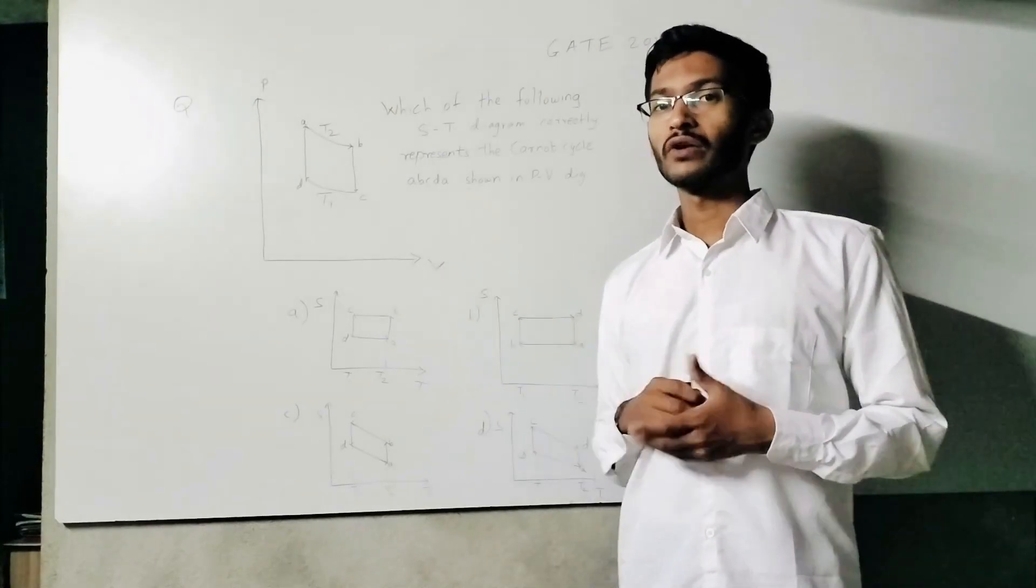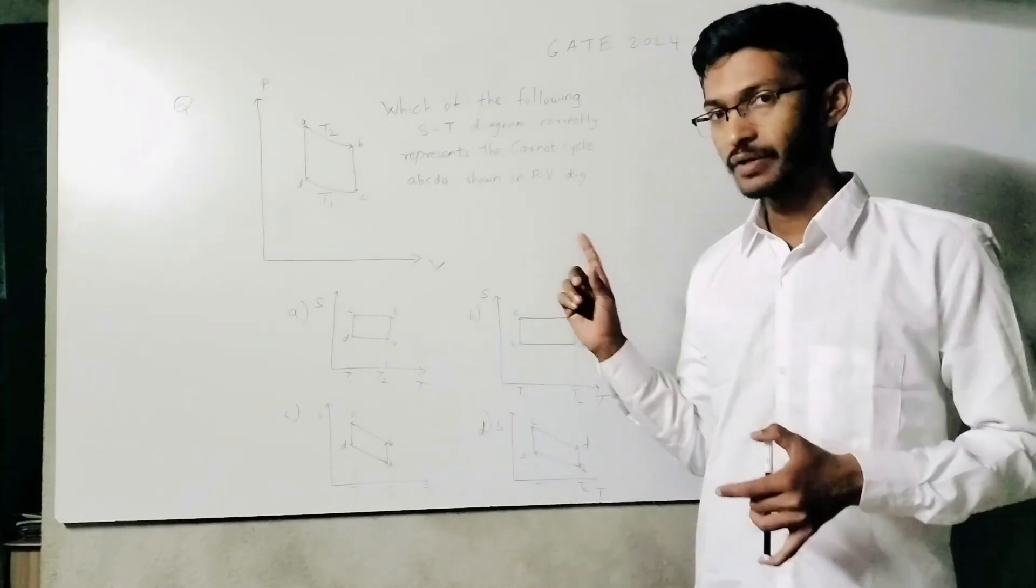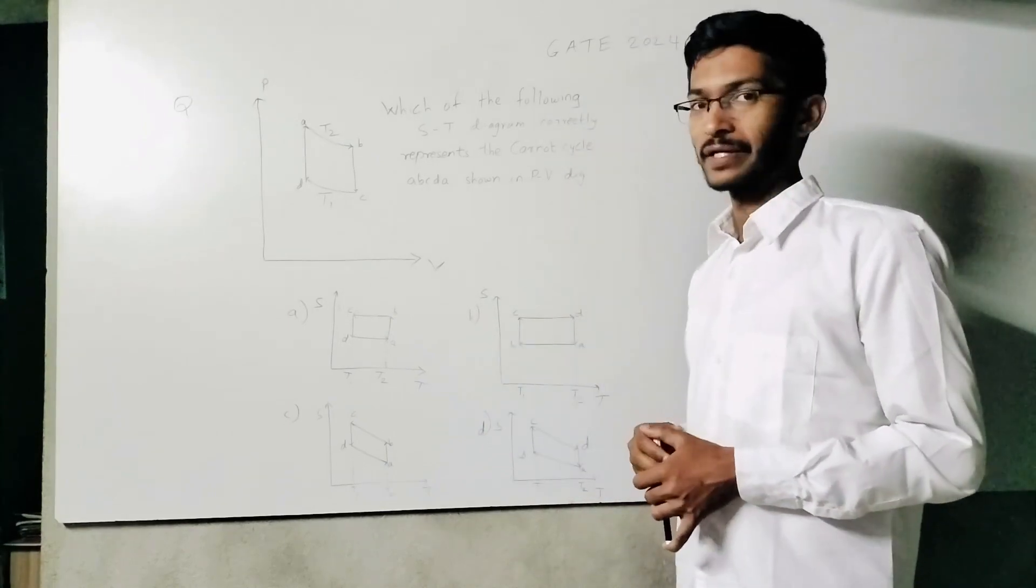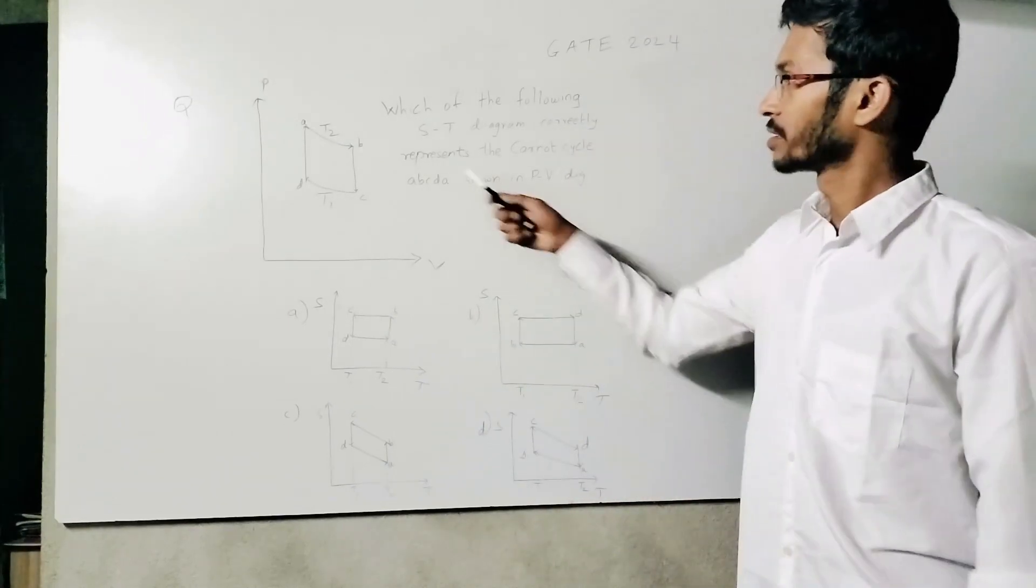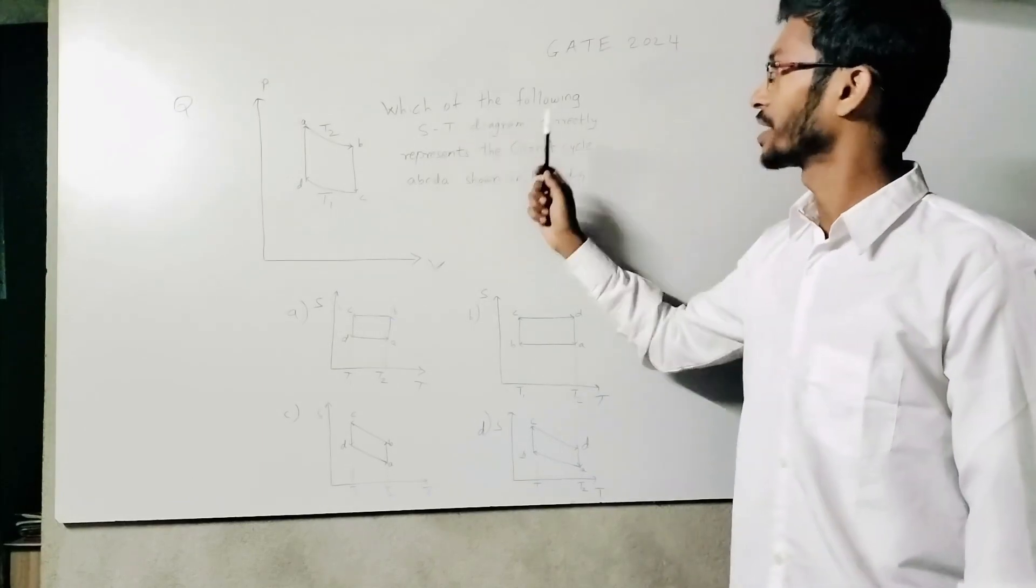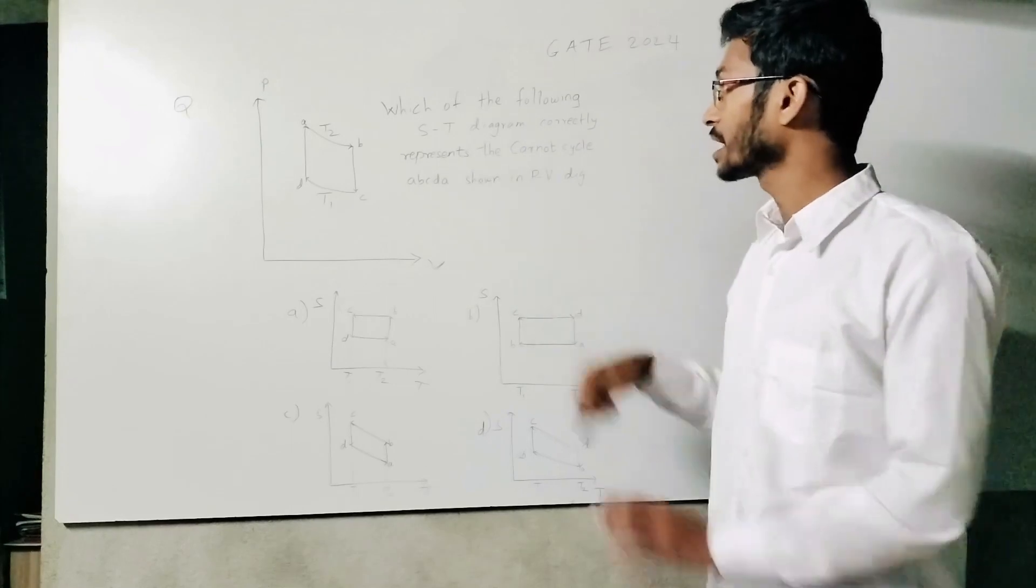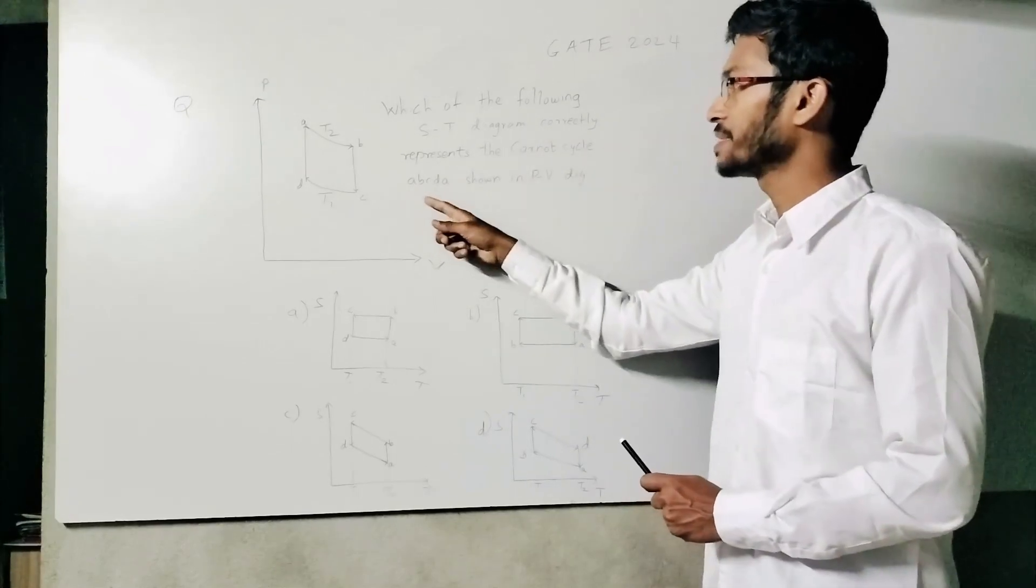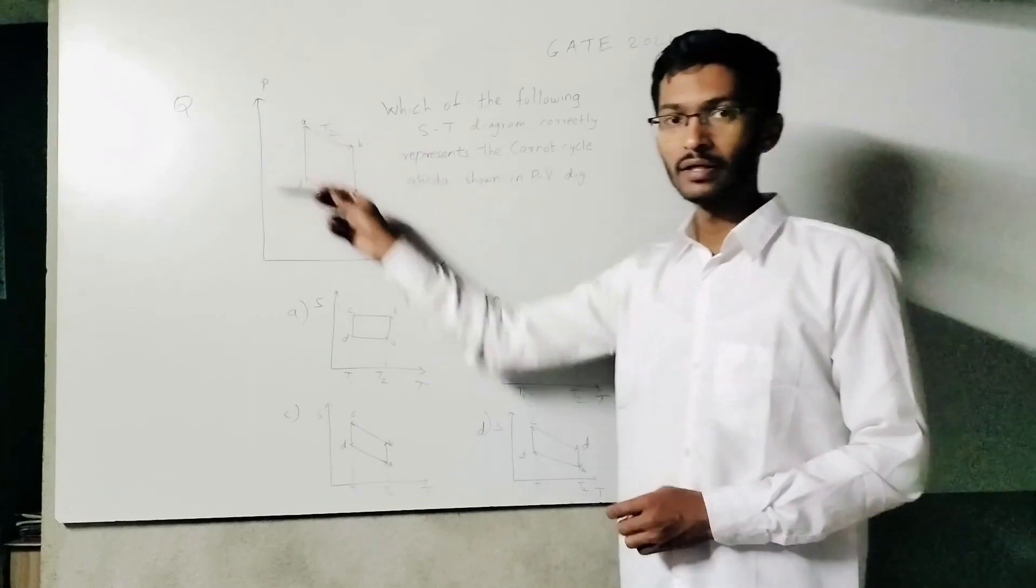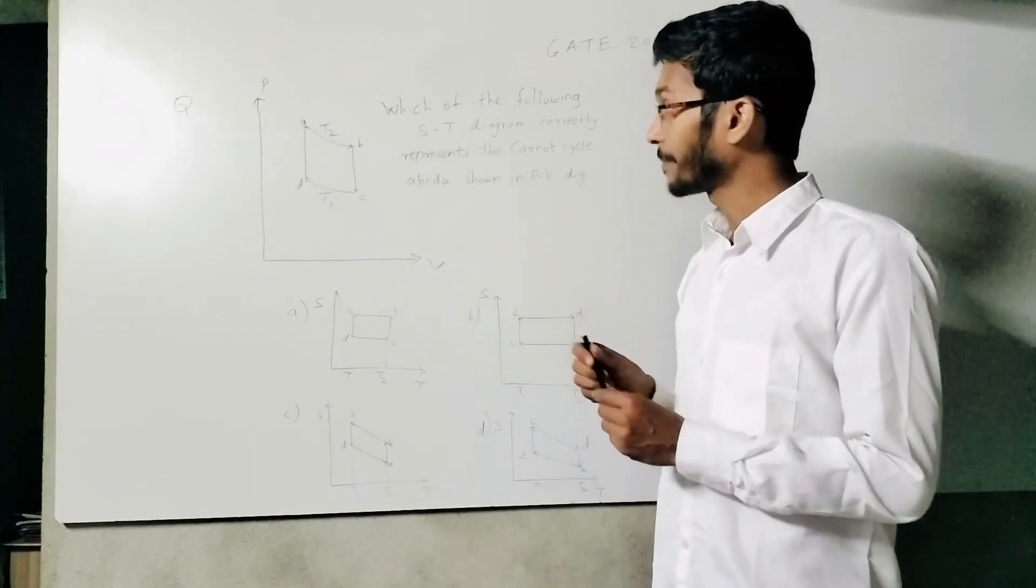This is a GATE 2023 problem, one mark. I am secure, so only one option is correct. This is from thermodynamics. The question is: which of the following ST (entropy-temperature) diagrams correctly represents the Carnot cycle ABCDA shown in the PV diagram here? So what is going to happen?